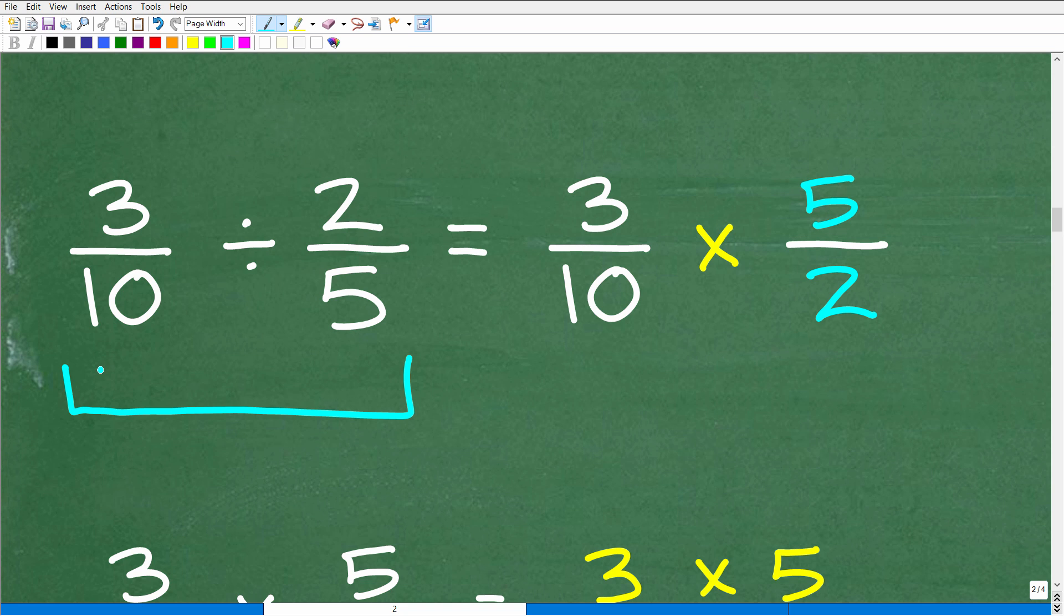So here we have 3/10 divided by 2/5. So this is a division problem right here. What we're going to do is change this into multiplication. So how do we do that? Well, what we do is we take the fraction to the right of the division symbol. So here's the division symbol. This is the fraction to the right. And we're going to flip it upside down. That's called the reciprocal.